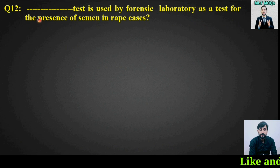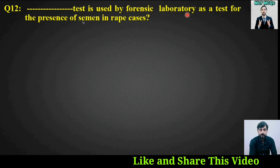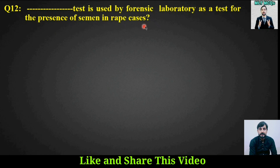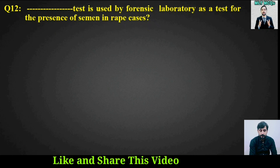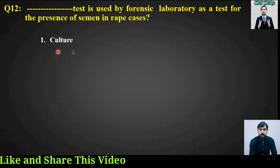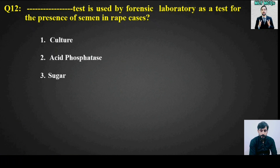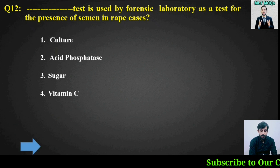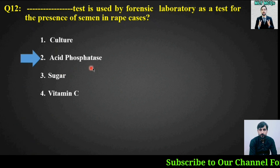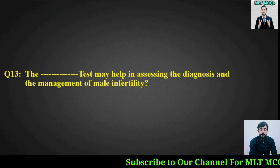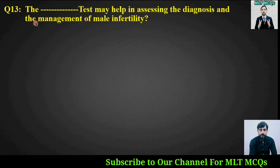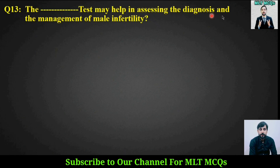MCQ number twelve: Which test is used by forensic laboratories as a test for the presence of semen in rape cases? Options are: culture, acid phosphatase, sugar, or vitamin C. The right answer is option number two — acid phosphatase.